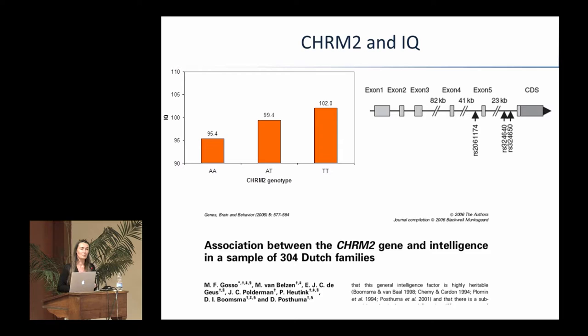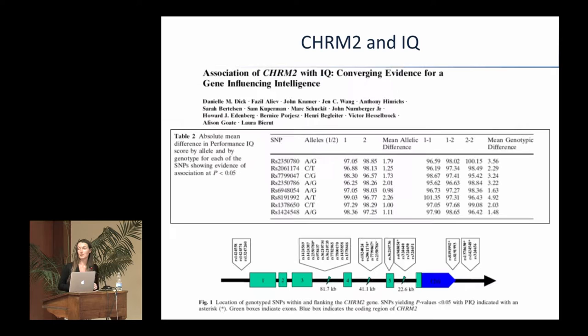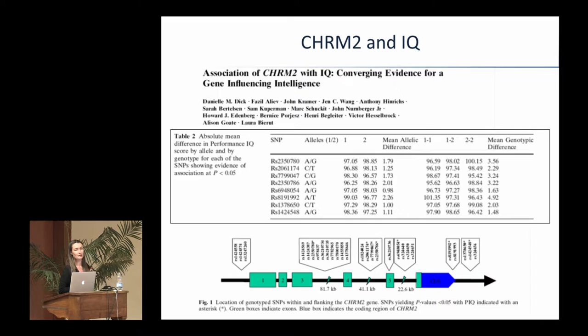At that time, this was one of the largest studies that looked at a candidate gene. We published this without having a replication ourselves. Then another group in the US genotyped the same SNPs, also measured IQ, and found a significant association with the same SNP — so it was replicated. A couple of years later, it was also attempted for replication by Ian Deary's group, and they de-replicated it. So this gene has been replicated and de-replicated ever since, and we're still debating whether it's actually involved in IQ.